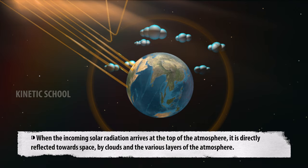When the incoming solar radiation arrives at the top of the atmosphere, it is directly reflected towards space by clouds and the various layers of the atmosphere.